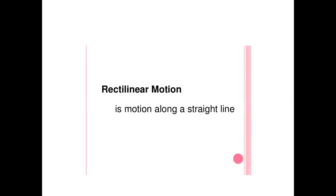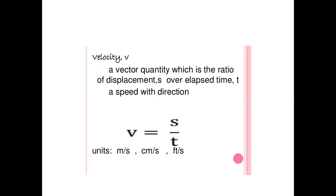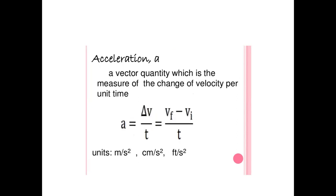Rectilinear motion is motion along a straight line. We are going to work out a few quantities to describe rectilinear motion. Speed is the first quantity — it is a scalar quantity; distance divided by time gives speed, with unit meters per second. Velocity is a vector quantity; displacement divided by time gives velocity. Acceleration is a change in velocity with respect to time and is a vector quantity, where final velocity minus initial velocity divided by time gives acceleration, with unit meters per second squared.